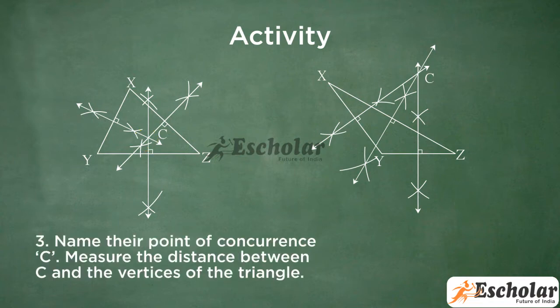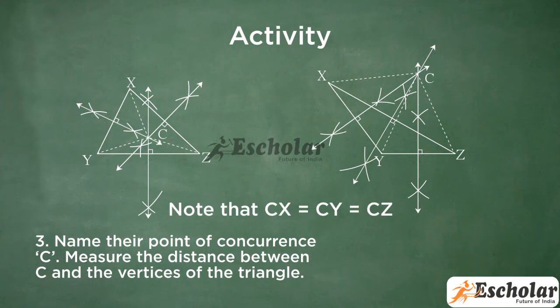Third, name their point of concurrence C. Measure the distance between C and the vertices of the triangle. Note that CX is equal to CY is equal to CZ.